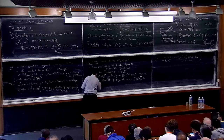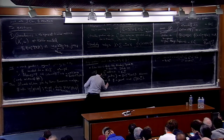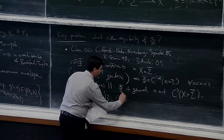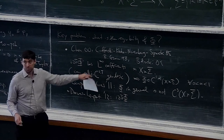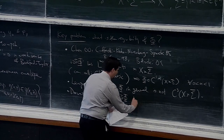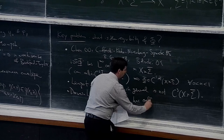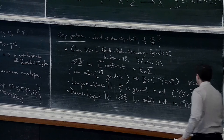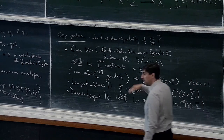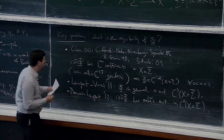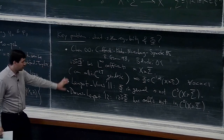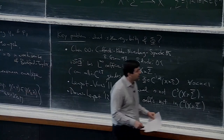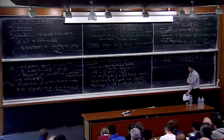Then later, Darvas and Lempert in 2012 proved that in fact dd-bar phi in general has coefficients which are not continuous. So dd-bar phi is bounded but in general not continuous. It seems like it's almost optimal here: you have dd-bar phi bounded but in general not C^0.